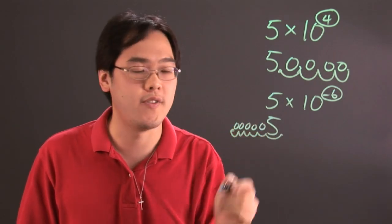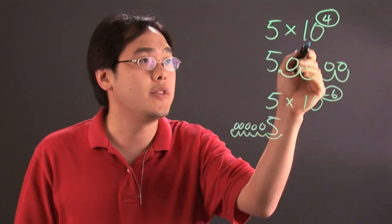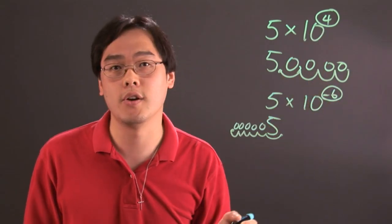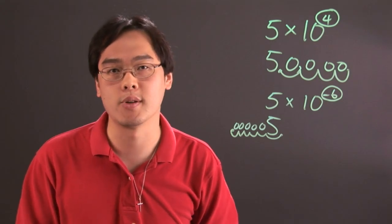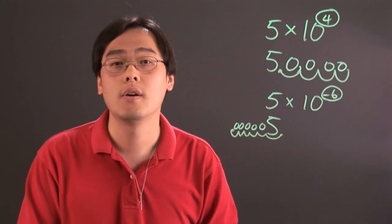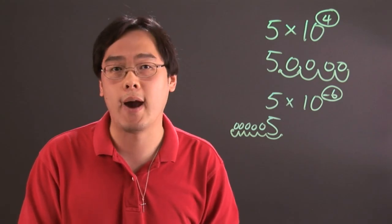So the key is determining the sign of the exponent, and then that will tell you what direction to shift the decimal in when it comes to the powers of 10. So I'm Jimmy Chang, and that's how you determine multiplying by powers of 10.